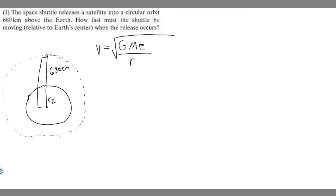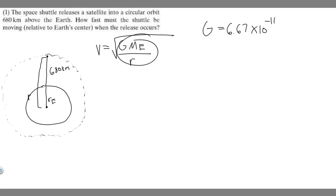We need G and M_e to solve this. G is the gravitational constant — it's a number you have to memorize: 6.67 times 10 to the minus 11. M_e is the mass of the Earth, which is another value to memorize: 5.98 times 10 to the 24 kilograms.